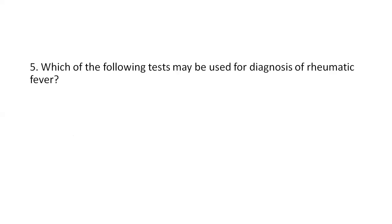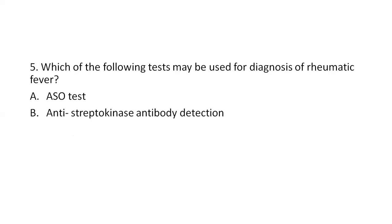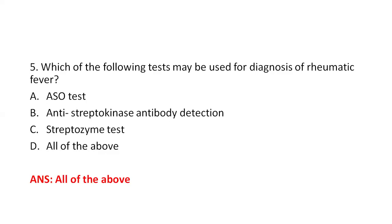Next question: Which of the following tests may be used for diagnosis of rheumatic fever? Option A, ASO test (anti-streptolysin O test). Option B, anti-streptokinase antibody detection. Option C, streptozyme test. Option D, all of the above. The right answer is Option D, all of the above. Acute rheumatic fever occurs in persons previously affected by streptococcal sore throat and is an autoimmune or immune complex reaction. An ASO titer more than 200 Todd units per ml is significant for rheumatic fever. The anti-streptozyme test is a passive slide hemagglutination test.